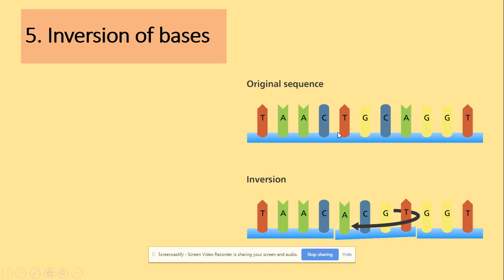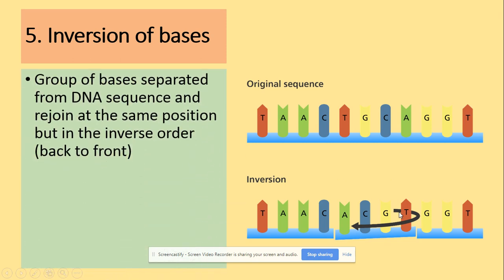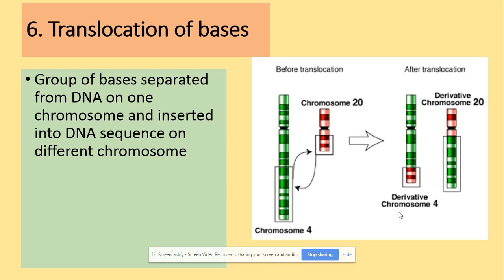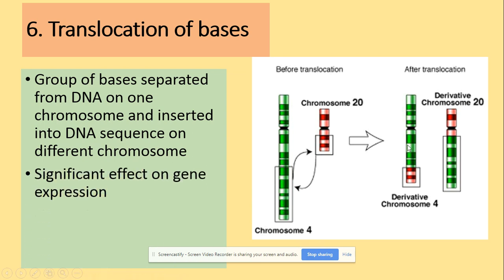Inversion of bases is another type of mutation where the sequence of DNA nucleotides shifts around — a group of bases separates from the DNA sequence and rejoins at the same position but back to front. The effect is a different amino acid sequence. Translocation of bases has a really significant effect: a group of bases separates from DNA on one chromosome and is inserted into a different chromosome, causing a significant effect on gene expression and a change in the phenotype of the organism.